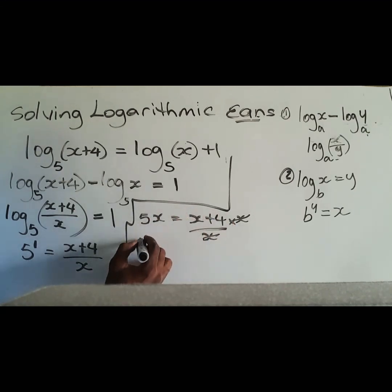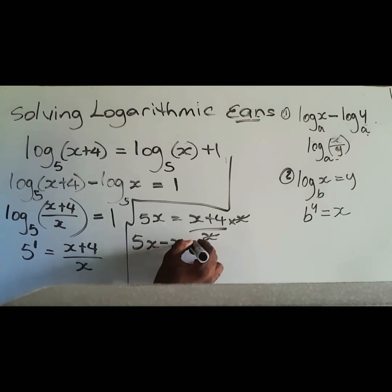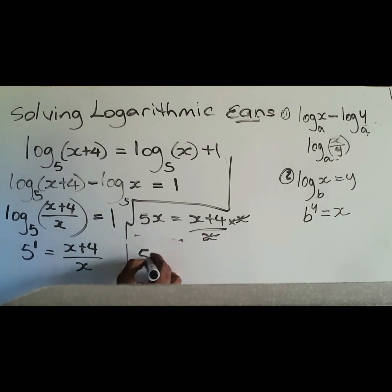So I'm going to gather the things on the other side, so we have 5x, x is on the other side, it's going to be a minus x. Let me write this clearer, so we have 5x minus x and that is equal to 4.